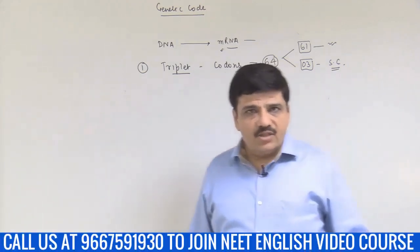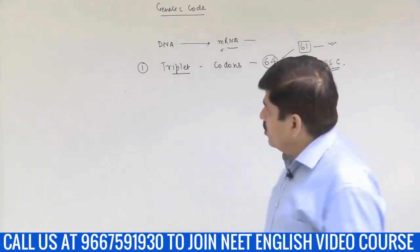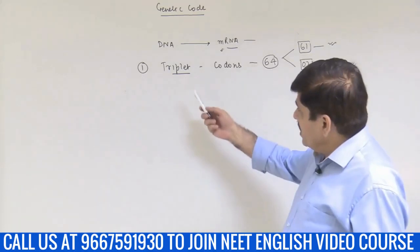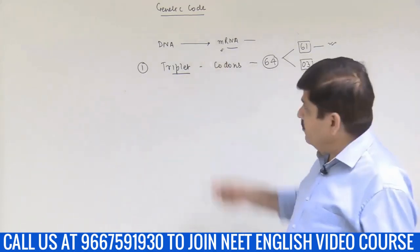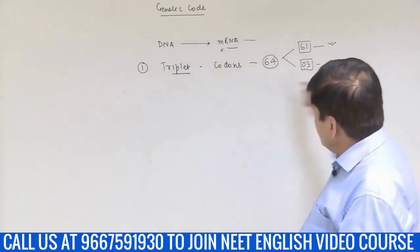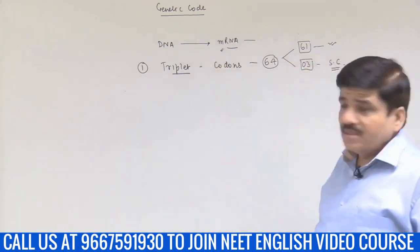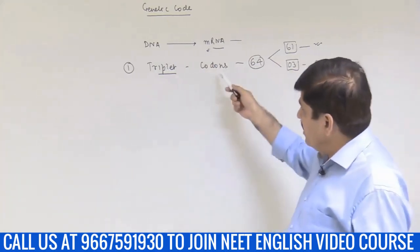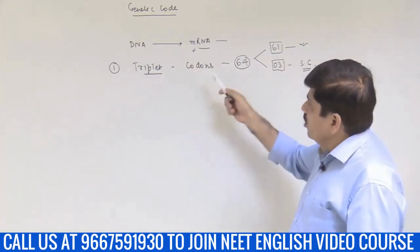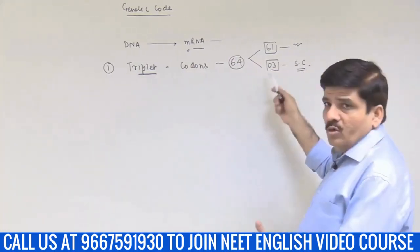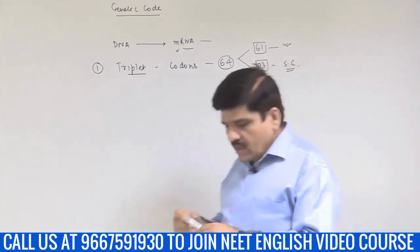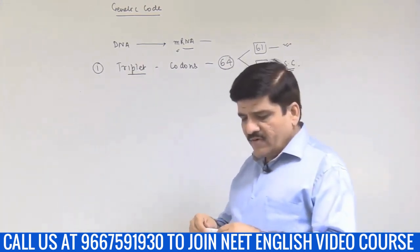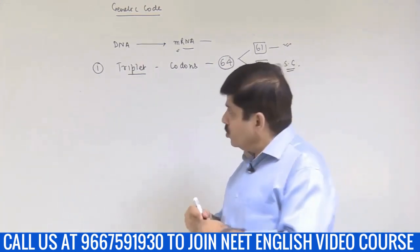Let us continue the discussion of genetic code. In the previous video, we have seen what exactly is genetic code. We have understood the basic concepts and we now know that it is a triplet and we know what exactly are codons. So let us pick up from where we left in the first video.